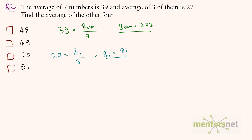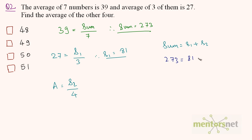Now we have to find the average of the other 4. The average of the other 4 is equal to the sum of the other 4 numbers divided by 4. We know the sum of all 7 numbers and the sum of the 3 numbers, so we can find the sum of the other 4. The total sum equals S1 plus S2, so 273 equals 81 plus S2, giving S2 equal to 192. Therefore the average of the other 4 numbers is 192 divided by 4, which is 48.